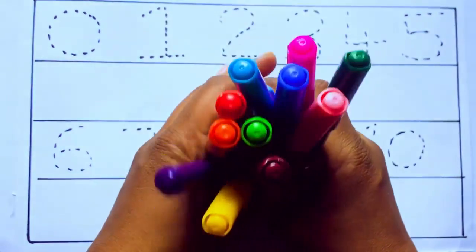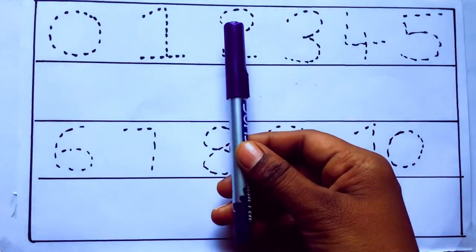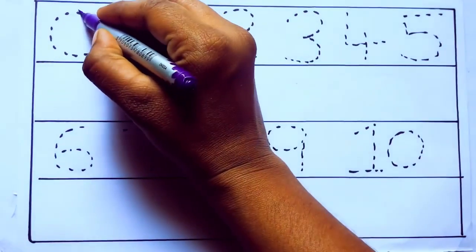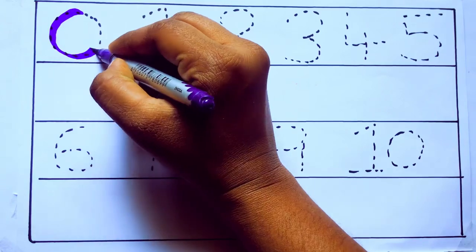And pink color. Let's draw numbers. Violet color 0, Z-E-R-O.